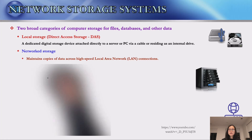The second category is network storage. It is a storage device that is available over a network and maintains copies of the data across high-speed local area network connections. It is designed to backup file databases or other data to a central location that can be easily accessed through standard network tools and protocols. Let's watch a video that explains the two main forms of network storage.